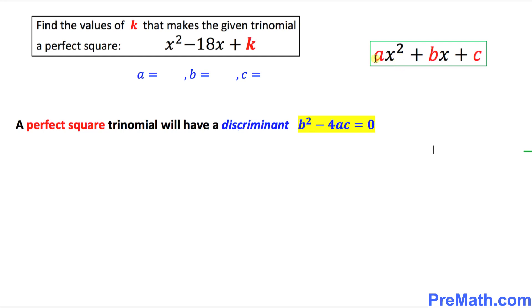Now let's compare this given trinomial with our standard form of this quadratic expression. We can see that a is simply 1 and b is negative 18.